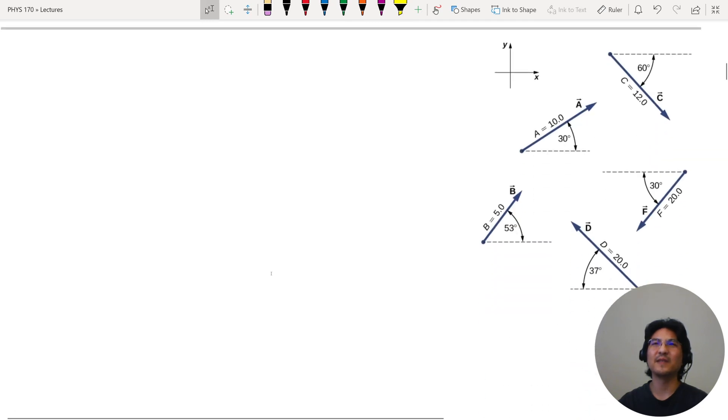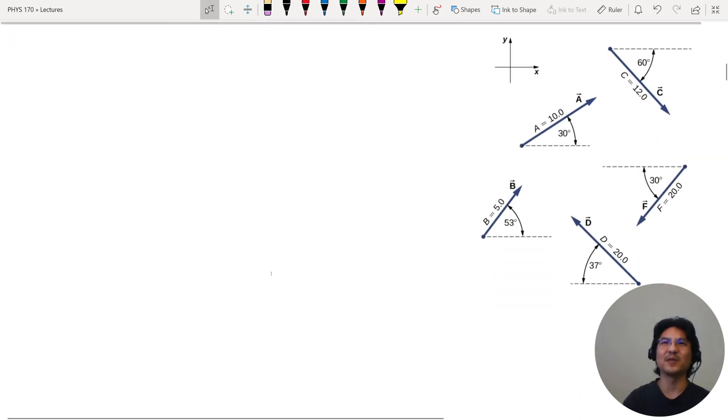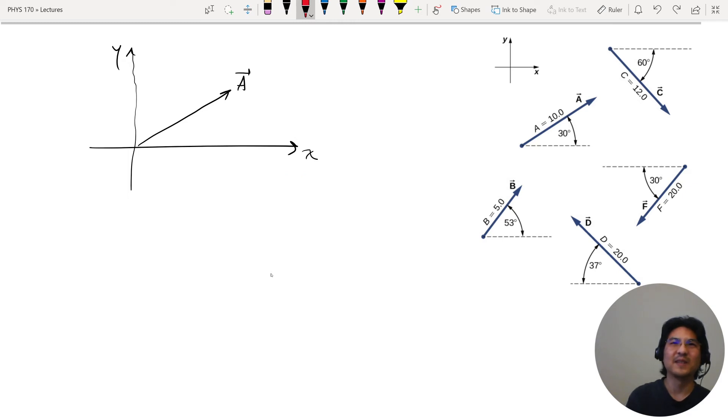So now let's describe vectors in terms of coordinates. Let's say here is vector A, and now I want to describe it in terms of, let's say I choose Cartesian coordinates like this. So in the direction this way, the x-direction, there's some unit vector i hat. So unit vector, there's the little hat to denote that it's a unit vector.